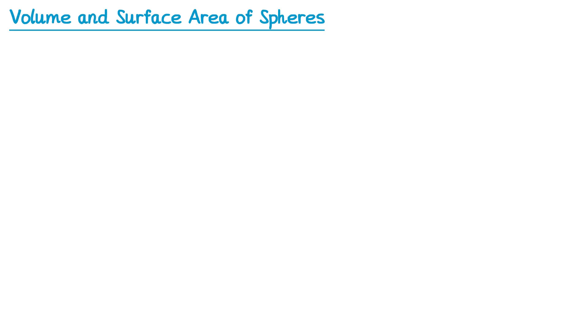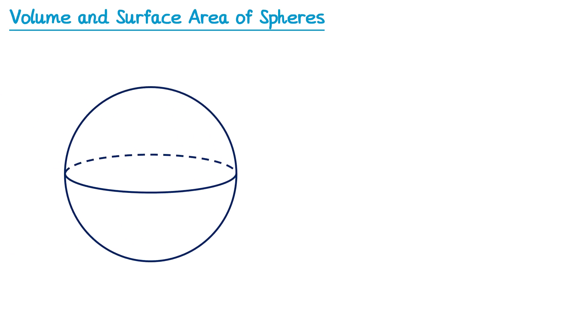In this video we're going to look at the volume and surface area of a sphere. A sphere is a 3D shape which is defined by its constant radius, which we will label with the letter R. Fortunately you're given the formulas in your exam question. They are: volume equals 4/3 π r³, and surface area equals 4π r².